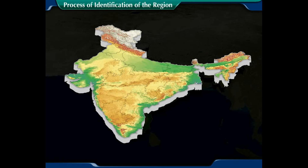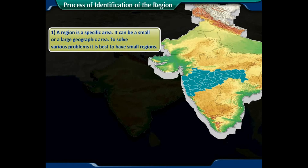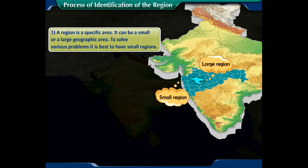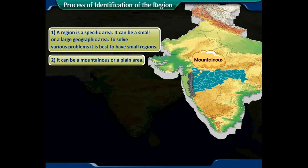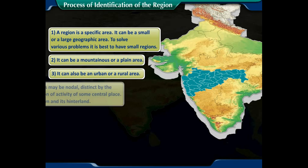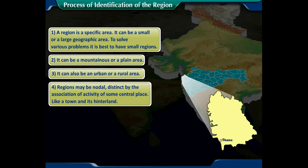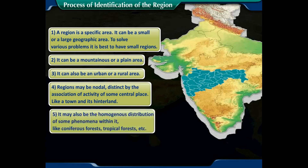Let us look at some features a region may have. Number one, a region is a specific area — it can be small or large; for solving various problems, it is best to have small regions. Number two, it can be a mountainous or a plain area. Number three, it can be an urban or a rural area. Number four, regions may be nodal, defined by the association of activity of some central place like a town and its hinterland.